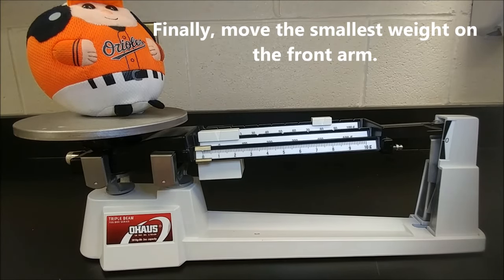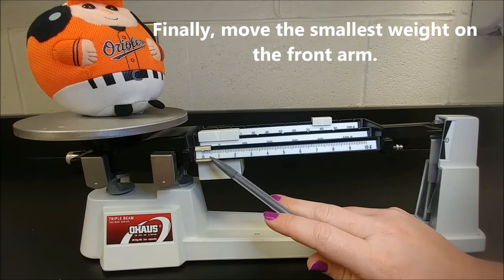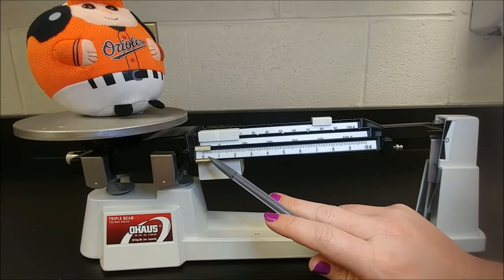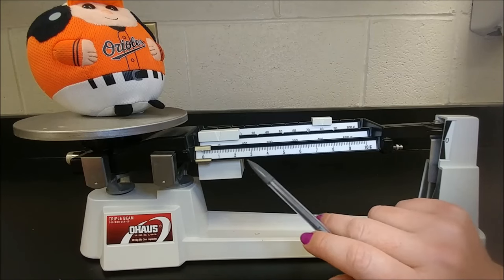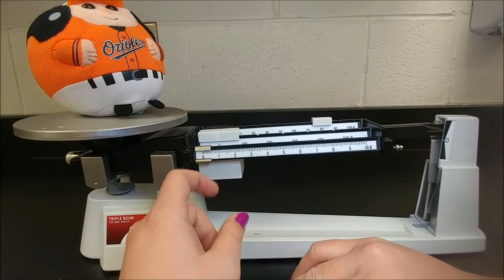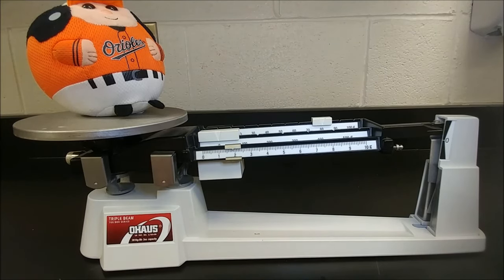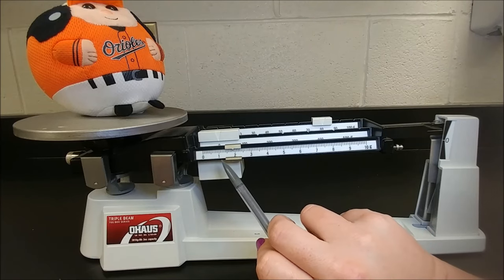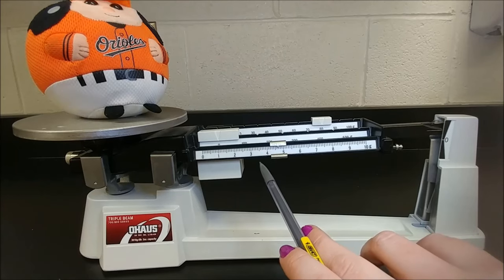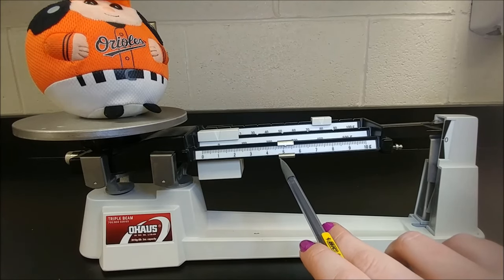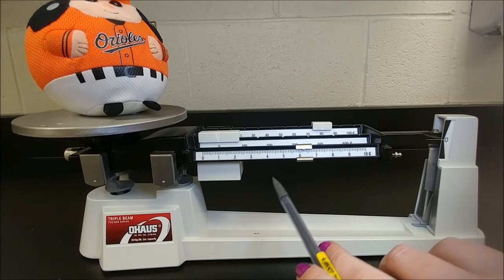The next step is to move this front bar, which counts by ones. These little ones in between are like 0.1, 0.2, 0.3, also known as milligrams. We're going to first just try and get it to these whole numbers. You can use your finger, but you'll notice there's a lot of bouncing. I like to use a pencil tip or my fingernail to move it. There's not as much bouncing. I'm going to move this until the arm comes down and lines up with the zero.